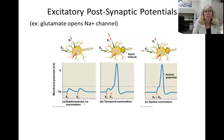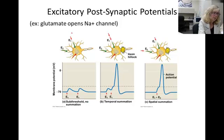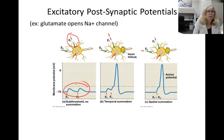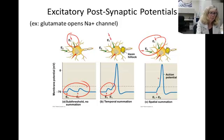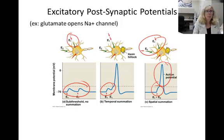Excitatory postsynaptic potentials (EPSPs) have a depolarizing effect on the postsynaptic membrane. Often one signal is not enough to bring the neuron to threshold. If the EPSPs are close in time or close in location, they can add up to reach the depolarization threshold and cause an action potential.